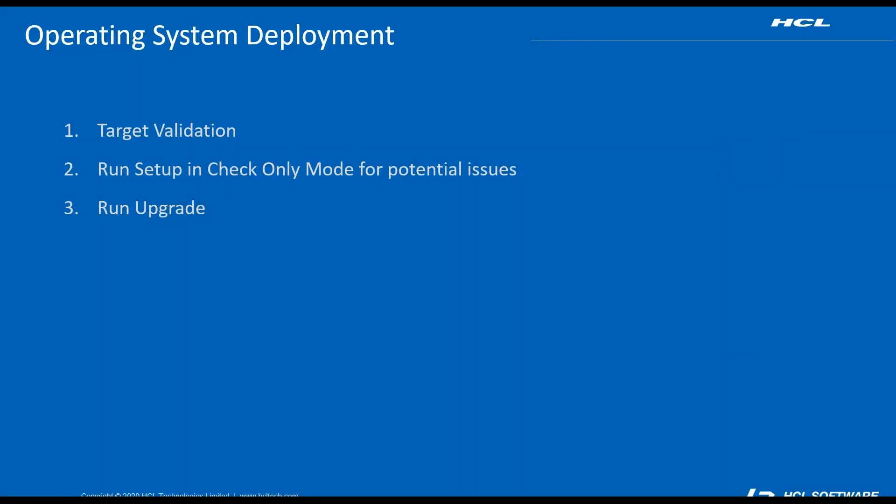Today we'll go over how to deploy it in BigFix. The first step would be doing the target validation, where you're checking the machine has enough disk space and the license is activated. The second step, we'll do a check-only mode where it's pre-caching the download of the large ISO file to the machine. It's also checking the state of the operating system to see if there are any driver or application conflicts before the upgrade. Then, if everything's assessed, we will run the upgrade process as a separate action and that will not require any more downloads.